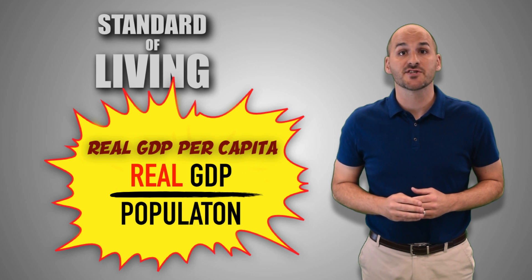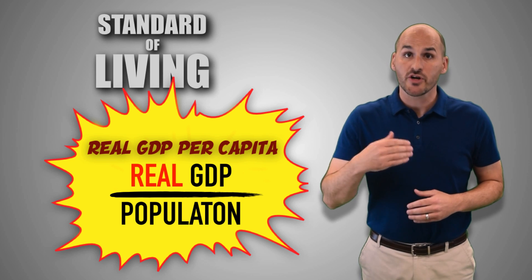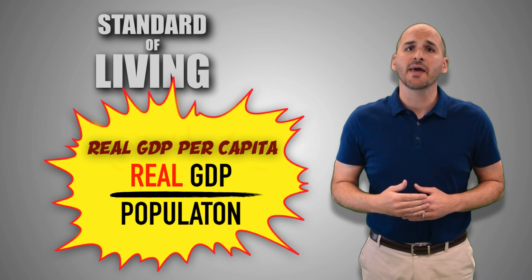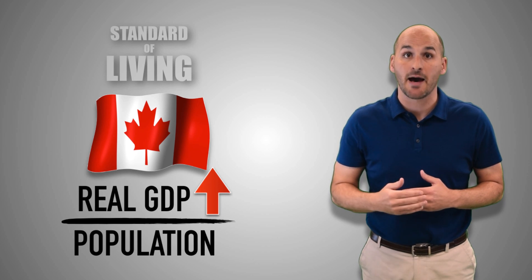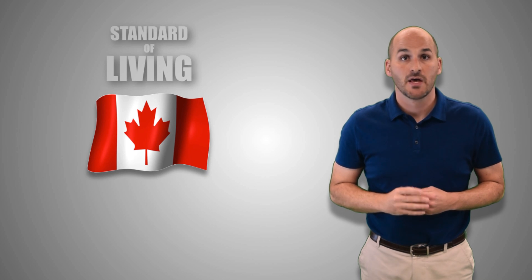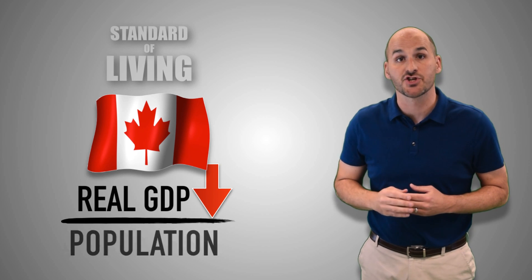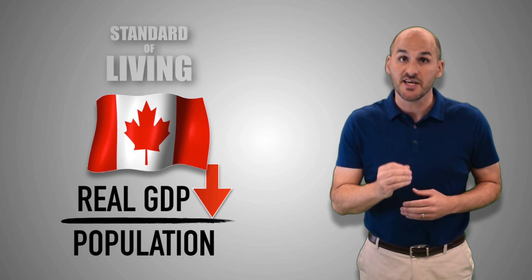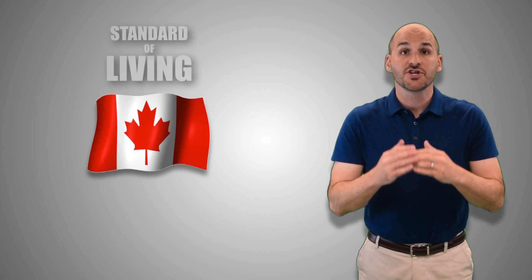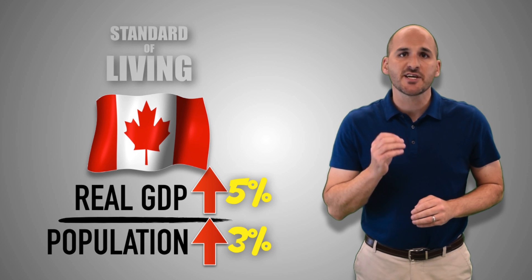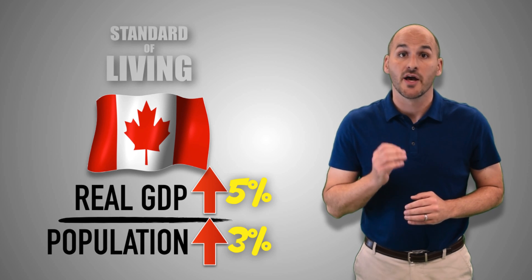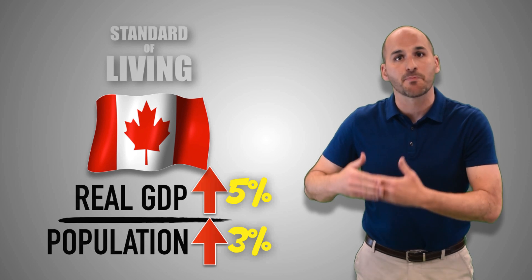It is well documented that population sizes are rising everywhere around the globe. As a result, in order to increase the standard of living year to year, real GDP output must grow at a pace that is faster than population growth. If a nation increases its real GDP output and its population size remains unchanged, then it experienced an increase in its real GDP per capita and, therefore, its standard of living. If real GDP grows over the course of a year by 5% and population grows over the course of that same year by only 3%, the country experienced an increase in real GDP per capita and, therefore, an increase in the standard of living because the real GDP growth outpaced population growth.